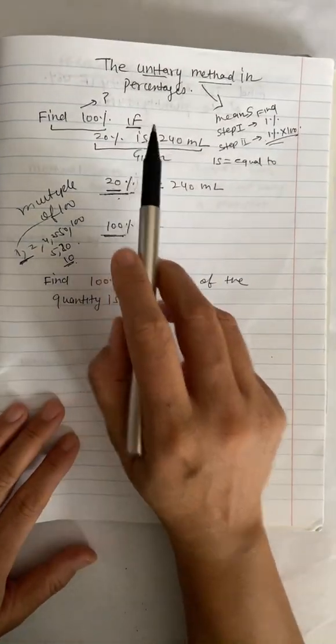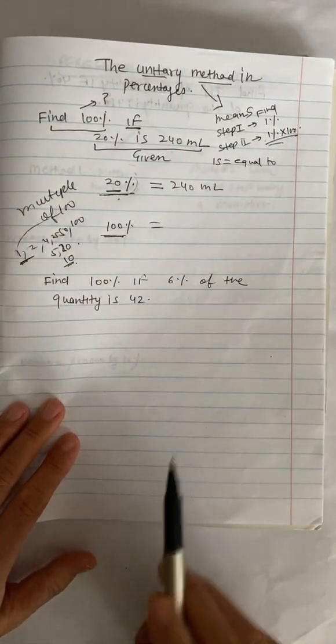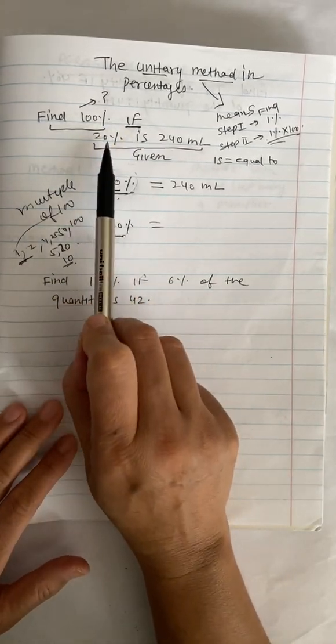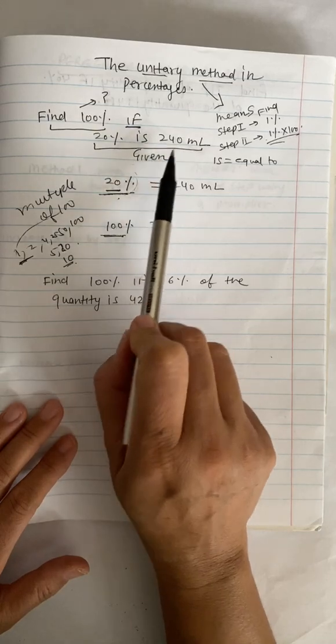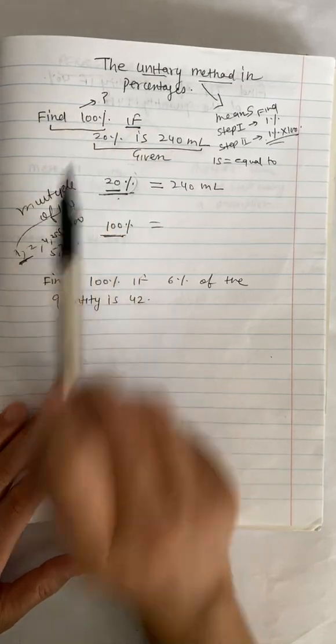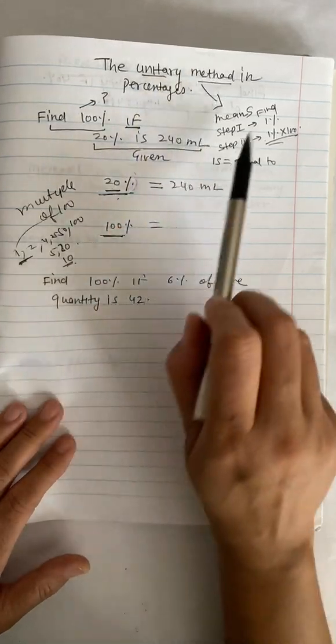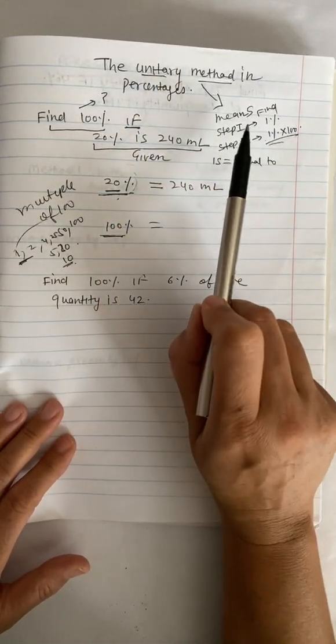In this lesson, I'm going to talk about the unitary method in percentages. If you have to find 100% and a certain percentage of a quantity is given, then how do we find the 100%? The unitary method involves two steps.